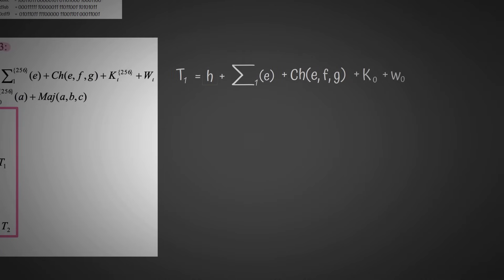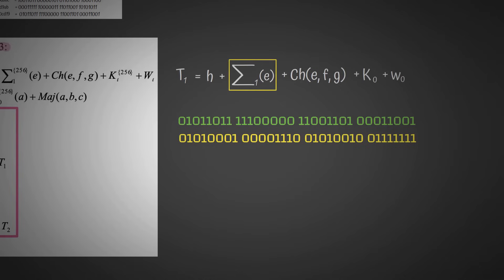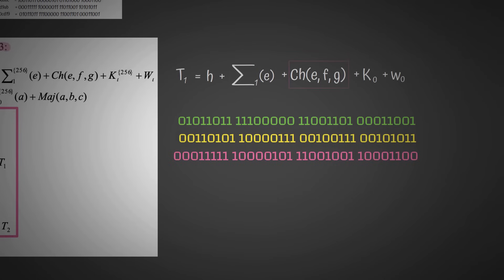So now we know what they all are. Here is H. Here is sigma 1 of E. Well, there's E, and then we apply sigma 1 to it, and we get this. Here is CH of E, F, G, which we have just done.